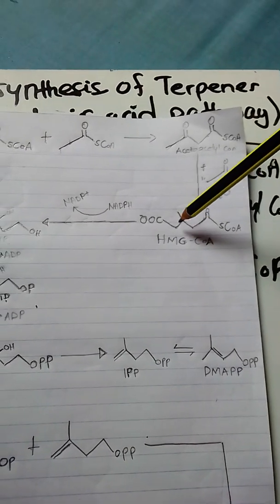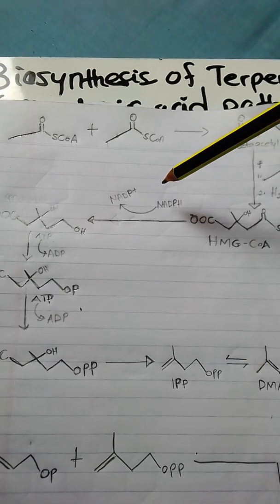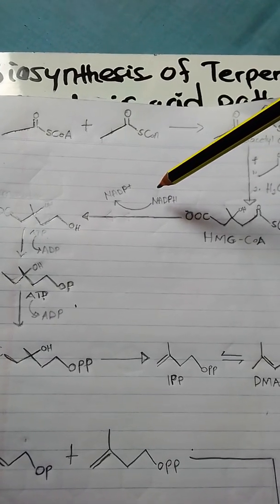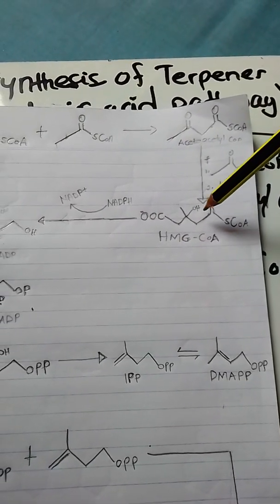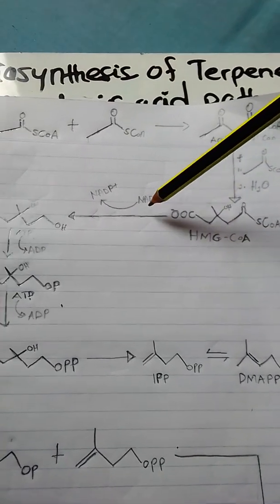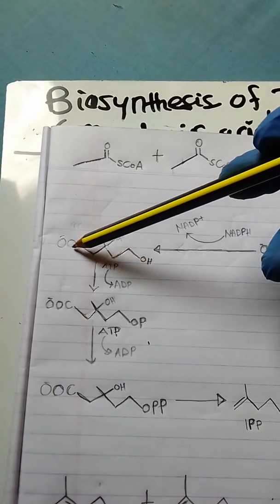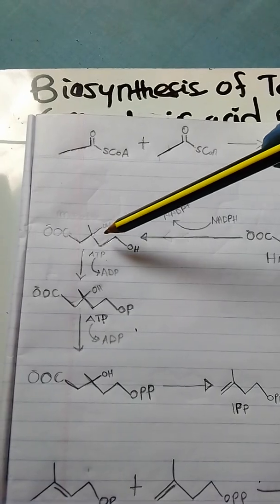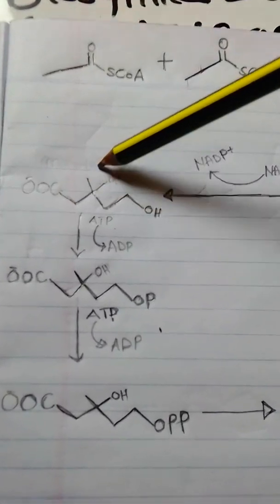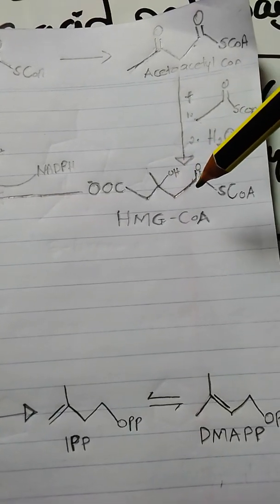The hydroxymethylglutaryl CoA will undergo a reduction by a reducing agent which we call NADPH — nicotinamide adenine dinucleotide phosphate. This end is going to be reduced by this reducing agent to form mevalonic acid, as we discussed earlier.